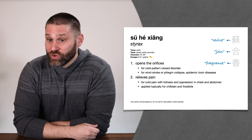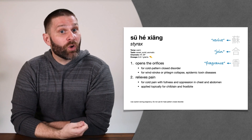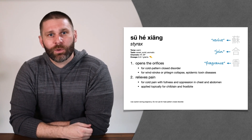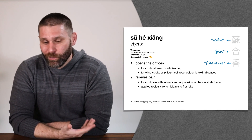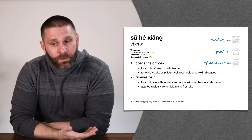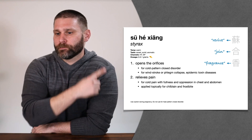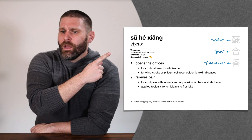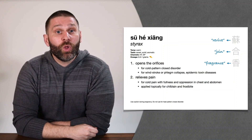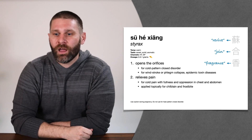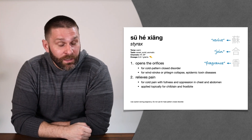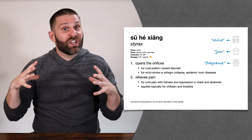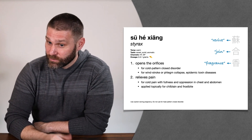The name Su He Xiang means 'revive and join fragrance' — xiang means aromatic or fragrant, the same character we've seen in the regulate Qi category with Mu Xiang, Chen Xiang, Tan Xiang, and Xiang Fu. Su means to revive — the same Su from Zi Su Ye (Perilla folium), the purple reviving leaf. He means joined or conjoined, the same character from He Huan Pi. So Su He Xiang: reviving and conjoined fragrance — we're reviving the spirit due to its aromatic smell.